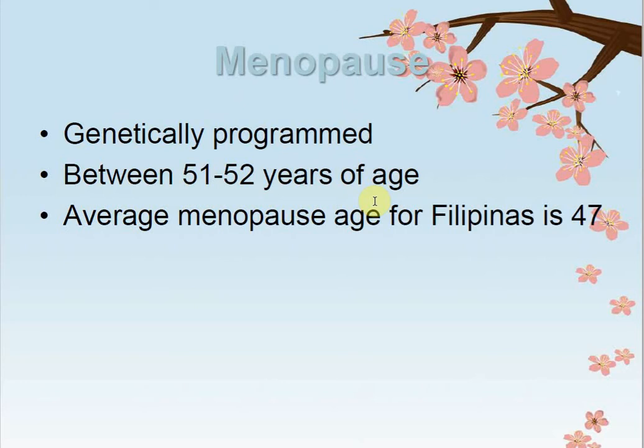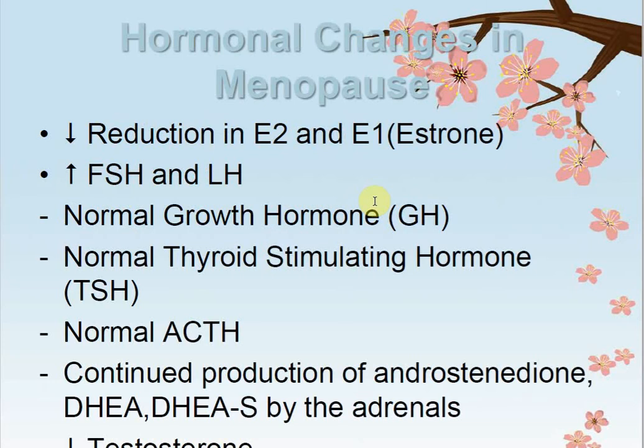Menopause is genetically programmed. Normally, genetic mutations occur in cell structures as a natural body process according to the aging process. It occurs between 51 to 52 years of age. The normal menopause ratio is between 47 to 52 years, though it can also occur at 47, depending on the physiology and biological development of the body. The average menopause age in the Philippines is 47 years.